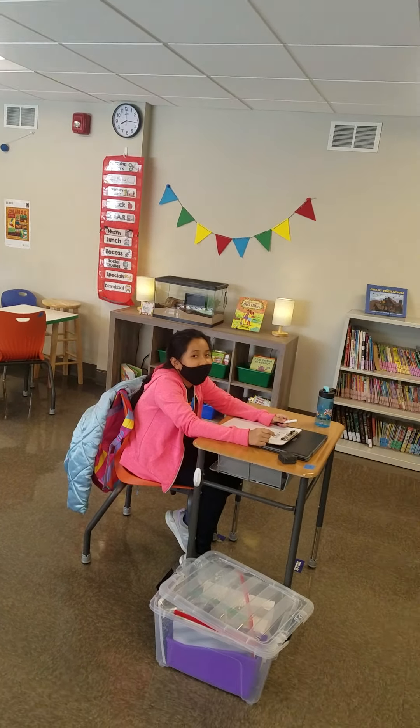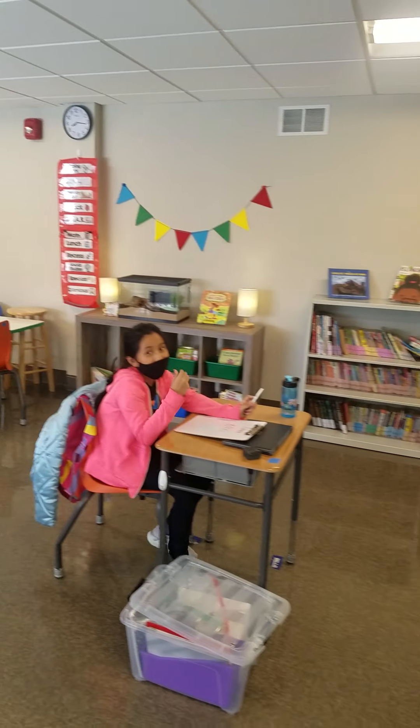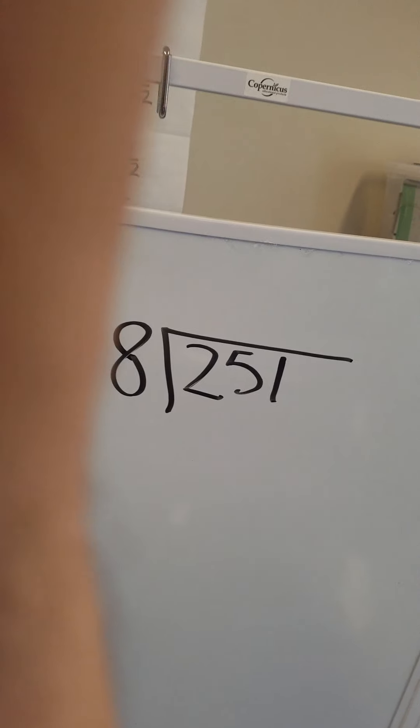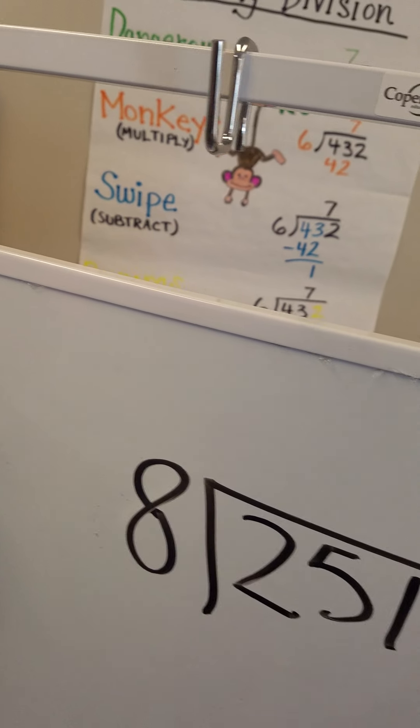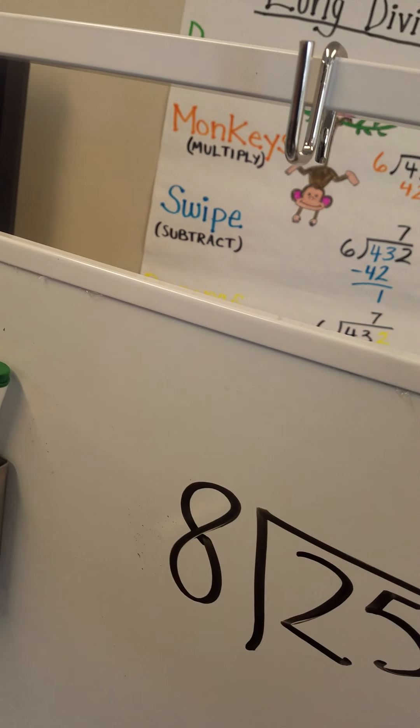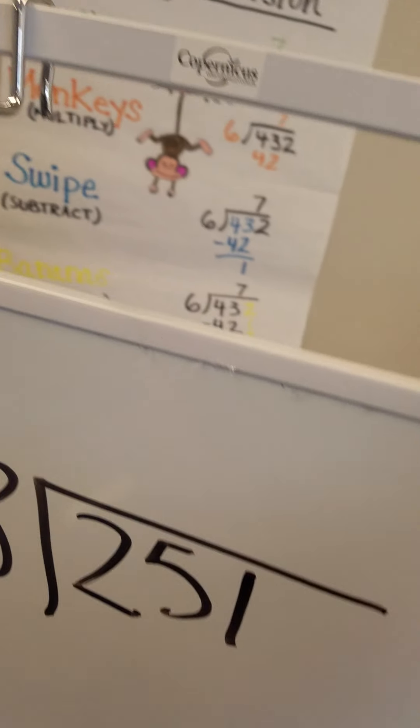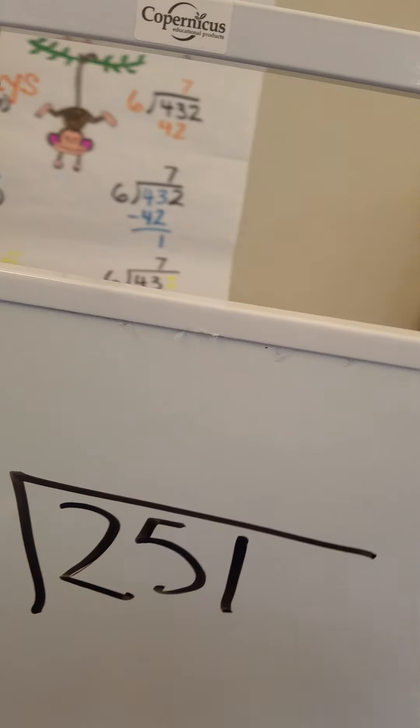No it cannot Linnea. So what do we have to do? 8 can go into 25 three times. So now everyone on their whiteboard, everyone is going to write a 3 right above the 2. We all need to keep up with the math problem so we're ready to go when it's our turn for our step. So everyone's going to write a 3 right here.